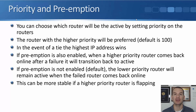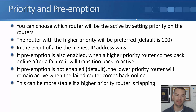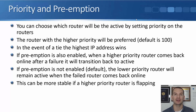For example, with HSRP routers R1 and R2, if we give R1 a higher priority and enable preemption, when R1 fails R2 will take over and become active. When R1 comes back up again, if preemption is enabled, R1 will transition back to active. If we haven't enabled preemption, R2 will remain the active router. R1 will not come back online as active, and not enabling preemption can be more stable.